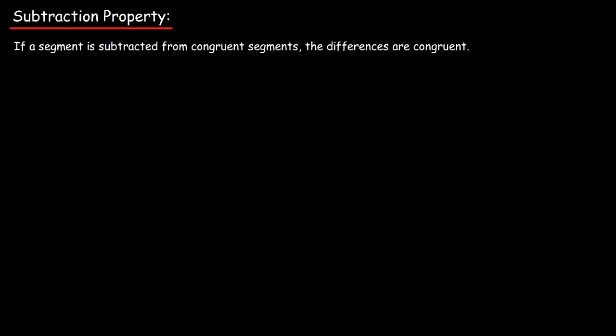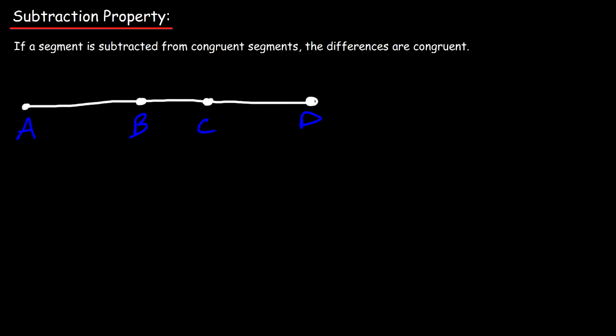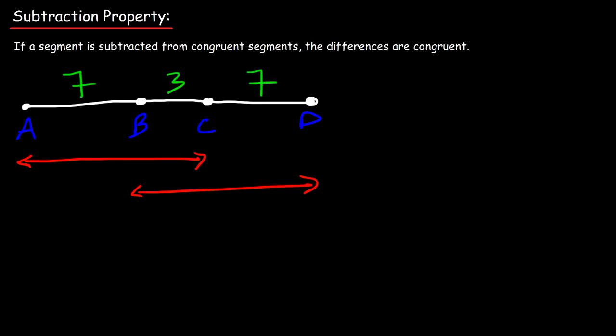Now let's move on to the subtraction property as it relates to segments. If a segment is subtracted from congruent segments, the differences are congruent. You can apply the subtraction property to angles as well — just replace the word segment with angle. The subtraction property is basically the reverse of the addition property. Let's draw segment AD with points B and C on it. Let's say AB is 7, BC is 3, and CD is 7. Notice that AC is 7 plus 3, which is 10, and BD is 3 plus 7, which is 10 as well.